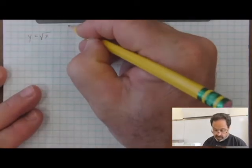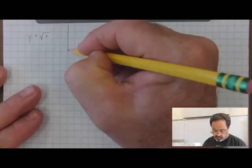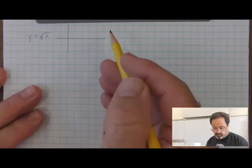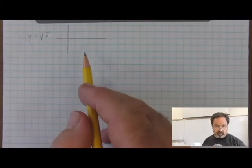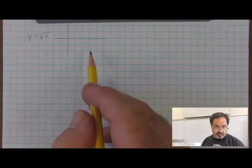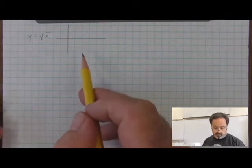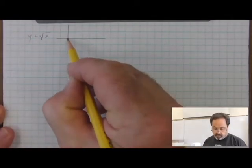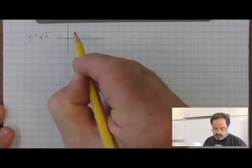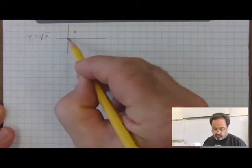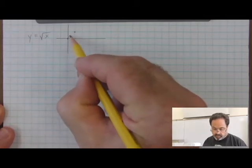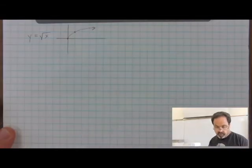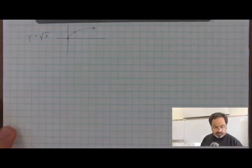The graph of this parent function — it's a parent function because it's the simplest form of a square root function — starts at the origin, contains the point (1, 1), and is a square root curve that looks approximately like that.